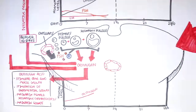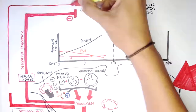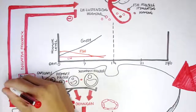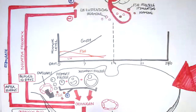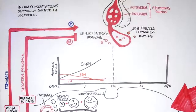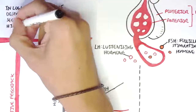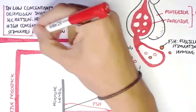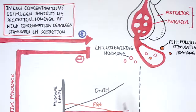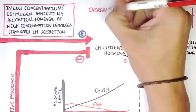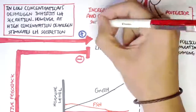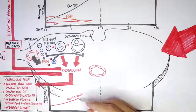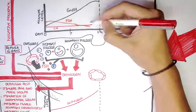After 10 days, estrogen levels continue to rise as the follicles mature. After 10 days, as estrogen levels rise, it will have a positive feedback and stimulate the release of LH. So at low concentrations, estrogen inhibits LH secretion; however, at high concentrations, estrogen stimulates LH secretion. The increase in GnRH and estrogen together stimulate LH secretion, and you see this massive spike in LH concentration.